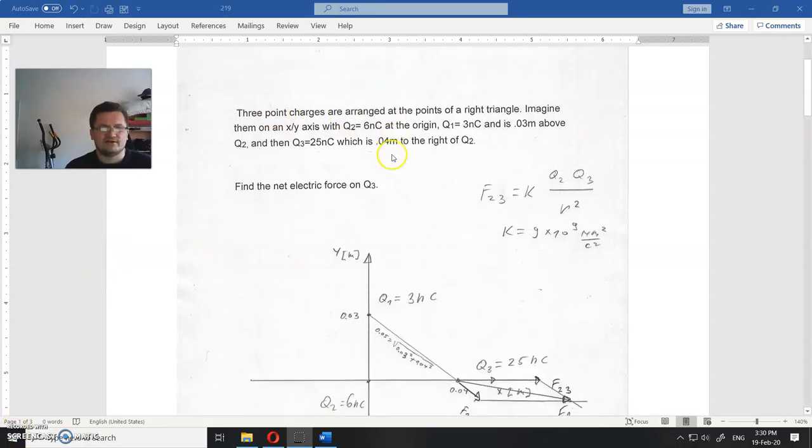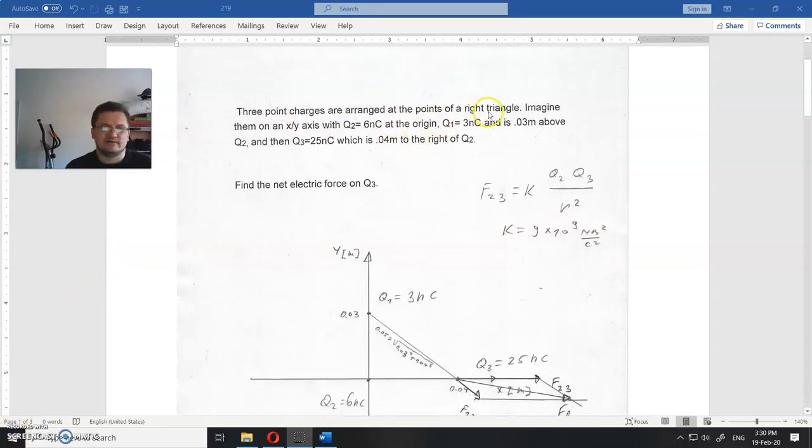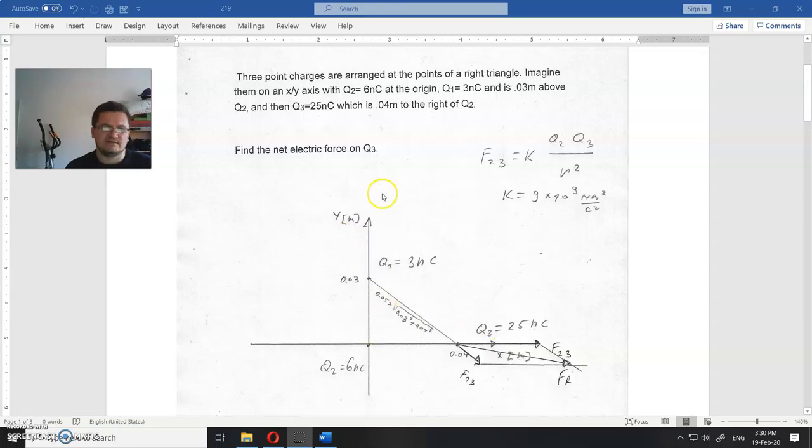Three-point charges are arranged at the points of a right triangle. Imagine them on an x-y axis, so this is the x-axis, this is the y-axis.